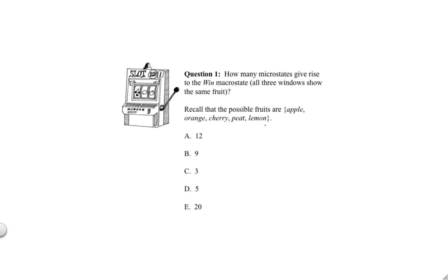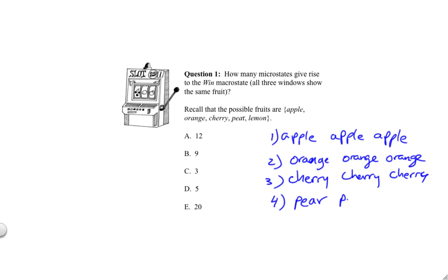Our first question was, how many microstates give rise to the win macrostate? Well, this one was pretty easy because we can just enumerate all the possibilities. We have apple, apple, apple, orange, orange, orange, and so on. So, the correct answer is five.